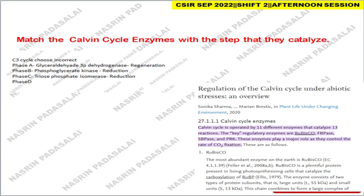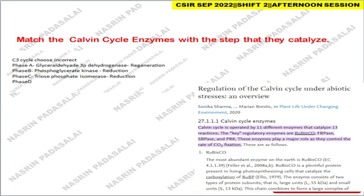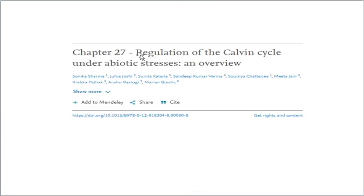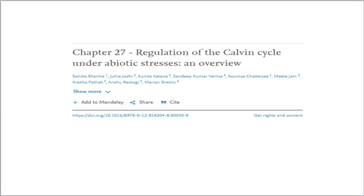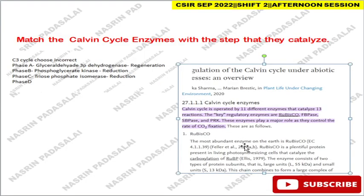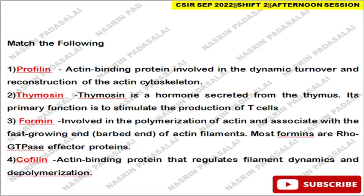There was a question with regard to Calvin cycle enzymes — in which set they act as catalysts. If you want a more in-depth analysis, you can refer chapter number 27, which covers regulation of the Calvin cycle under abiotic stress. Here they have detailed the role of each enzyme and in which particular pathway they catalyze.